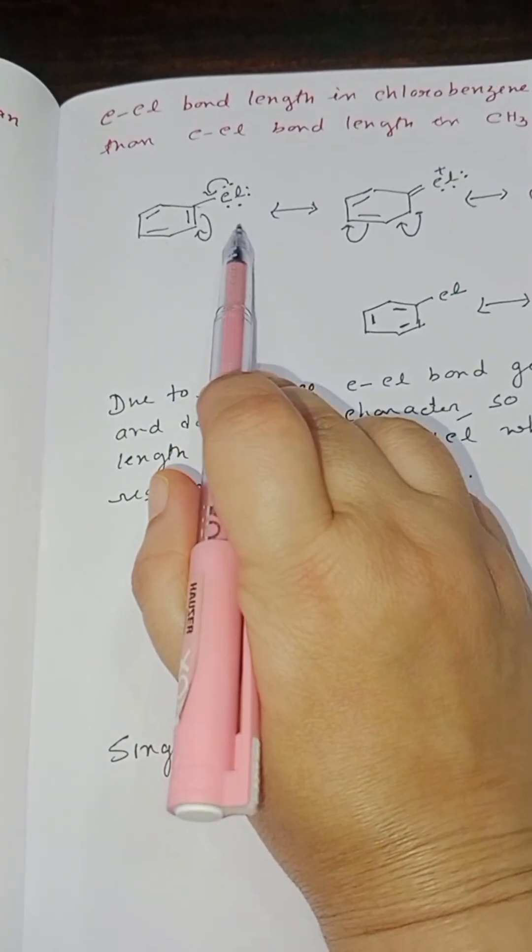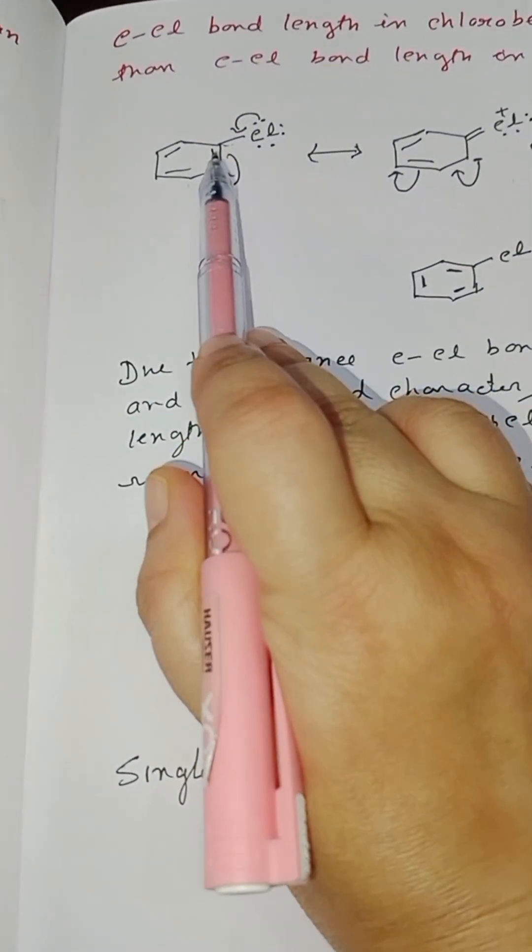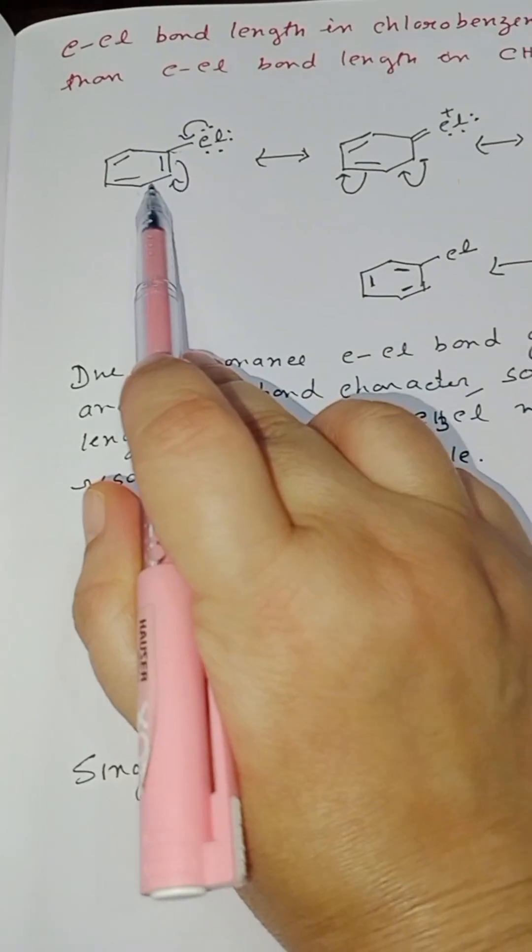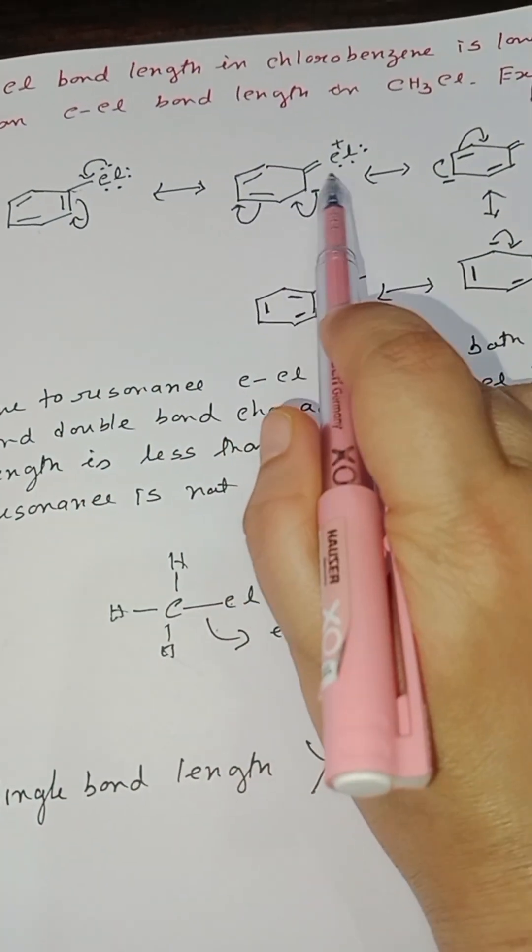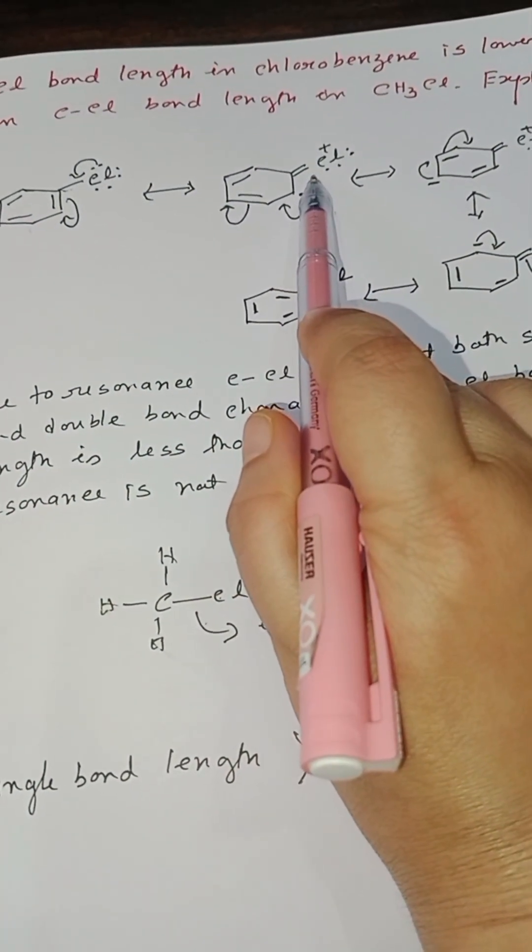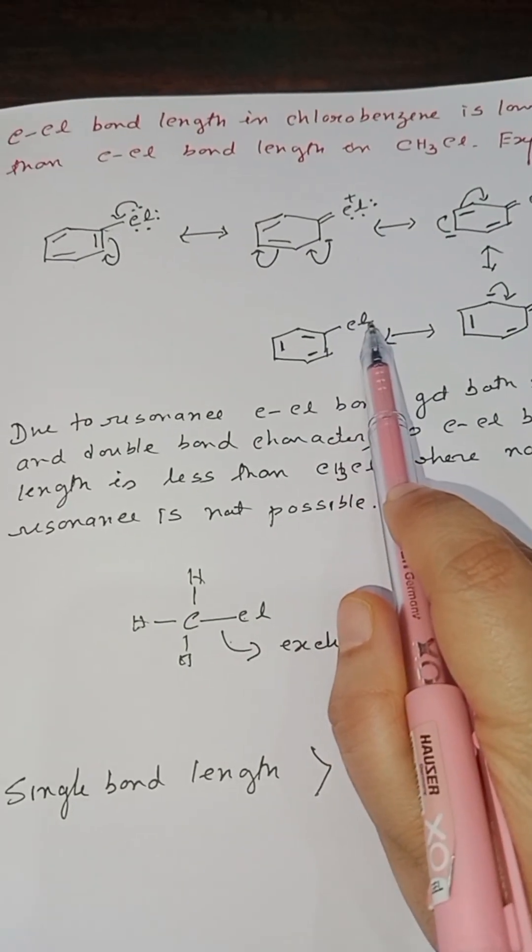This is chlorobenzene. Here, the chlorine lone pair can undergo resonance with the benzene ring. That's why the carbon-chlorine bond is getting a double bond character, though it's also a carbon-chlorine single bond.